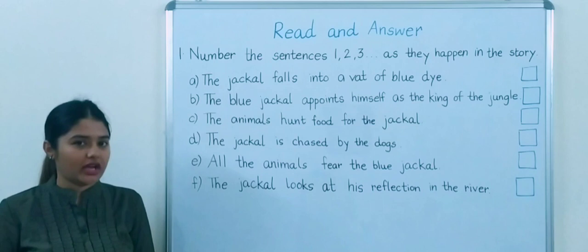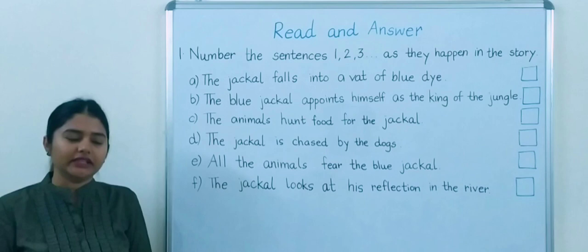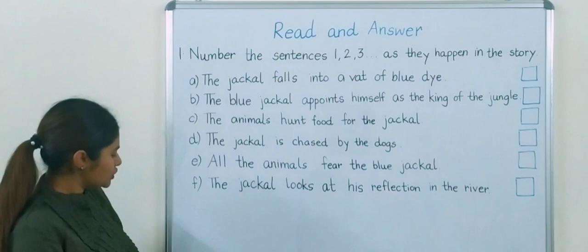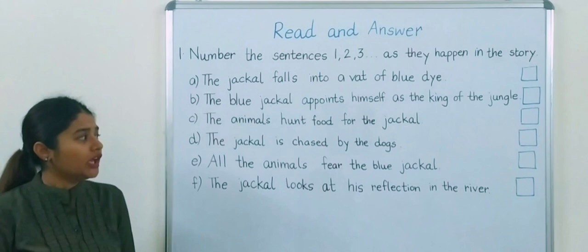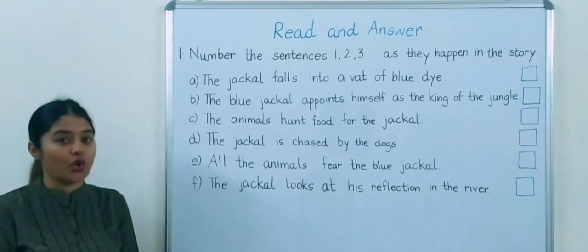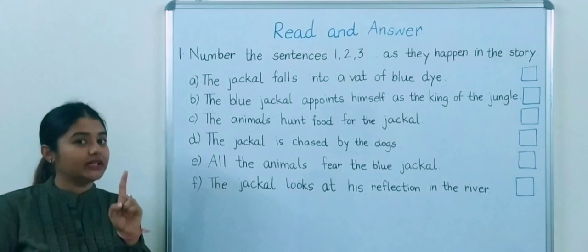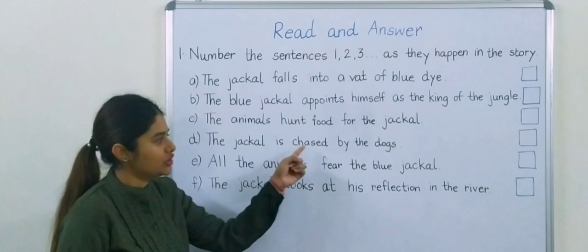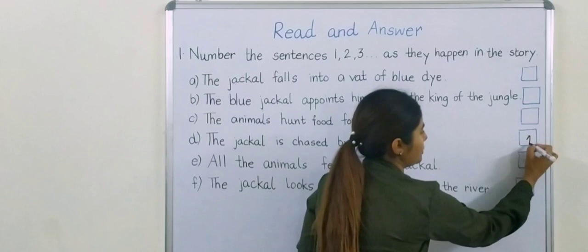Now, I hope you all remember the story. Many years ago, there was a jackal. One day, he was very hungry. So he went to search food in a nearby village. While he was looking for food, he got surrounded by a pack of dogs and the dogs started chasing him. So we will give point number 1 to this sentence: the jackal is chased by the dogs. We will write 1 here.